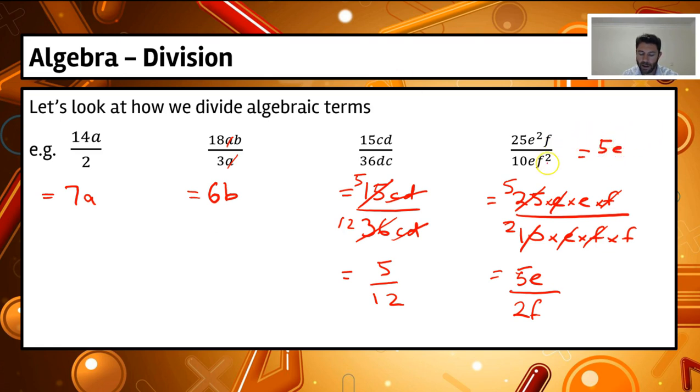Now the f and the f squared, same thing, but it's just on the opposite sides of the line. So the top f cancels out and then we're left with on the bottom 2f.